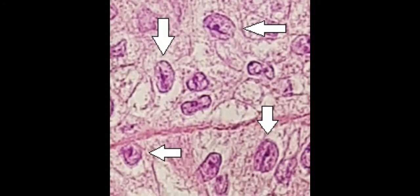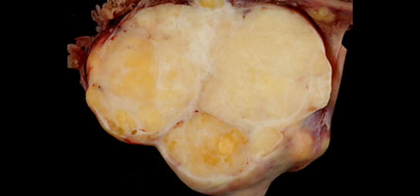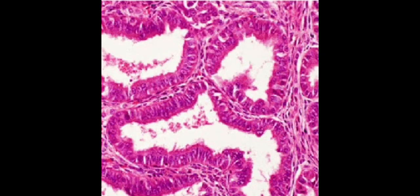These are histological features of a Brenner tumor — you can see the coffee bean nuclei indicated by arrows, which resemble coffee beans and give them their name. The gross appearance also looks benign. This is a slide of an endometrioid tumor — it resembles a normal endometrium during its glandular phase, with many glands visible, which explains the histological similarity.